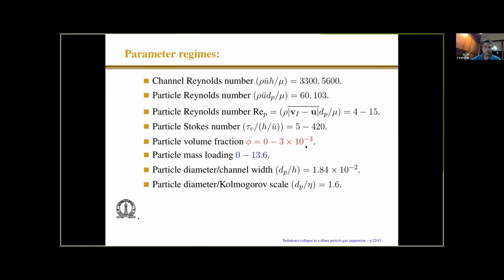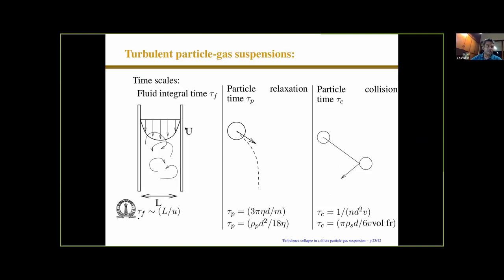We have a particle Stokes number. Volume fraction is small, up to 3×10⁻³, but the mass loading is greater than 10. The particle diameter to channel width and particle diameter to Kolmogorov scale are roughly of the same magnitude. We have a fluid integral time scale, a particle relaxation time, and a collision time. The ratio of particle relaxation time to fluid integral time scale is essentially the Stokes number. We consider both situations where the particle relaxation time is larger and smaller than the fluid time scale, and where the relaxation time is smaller and larger than the collision time — we cover all parameter spaces.